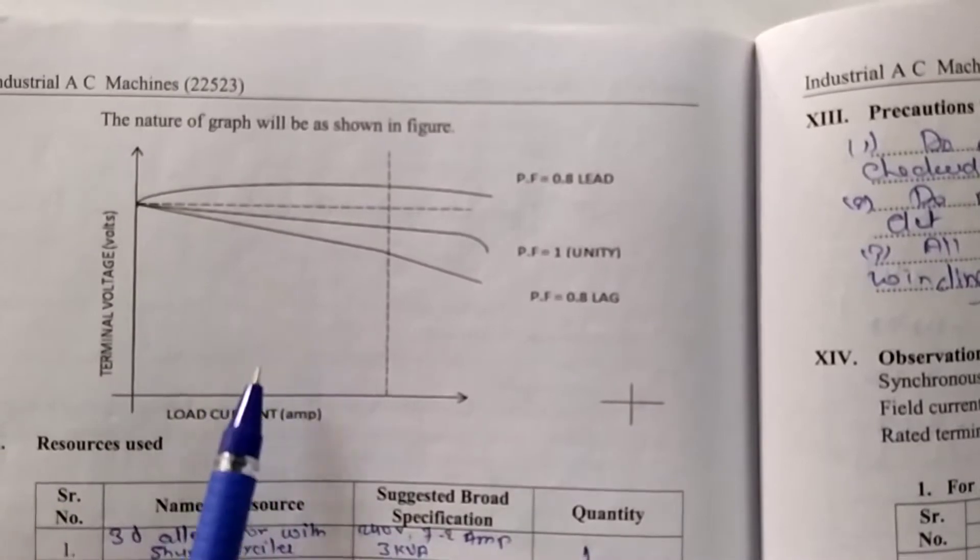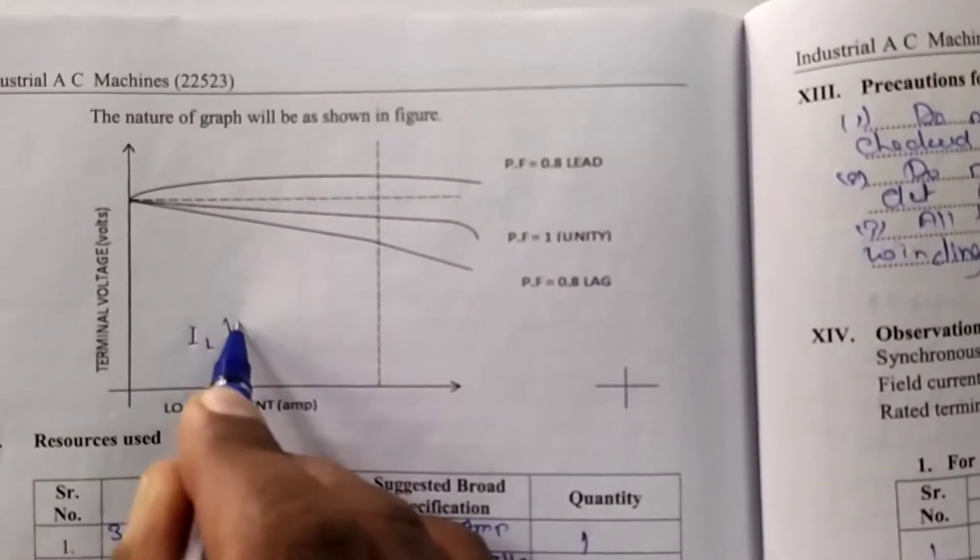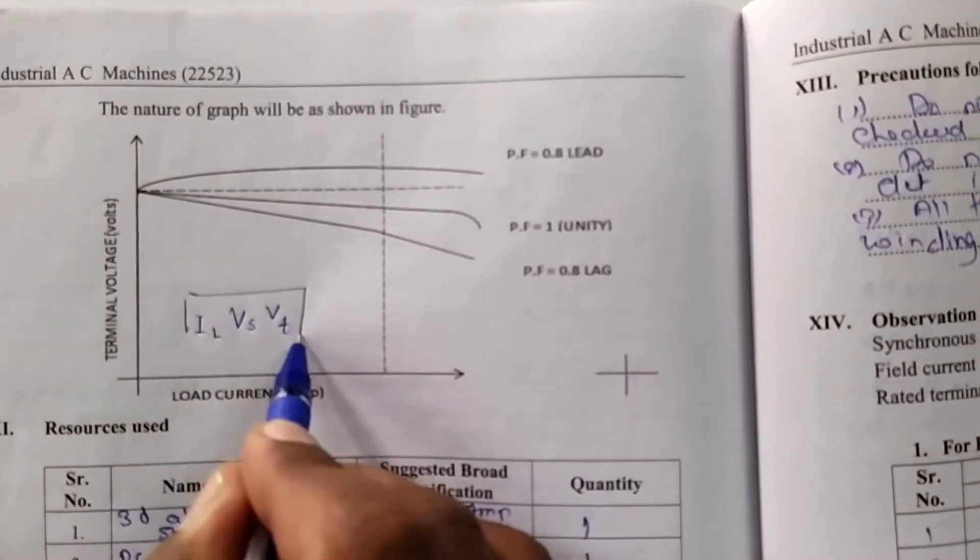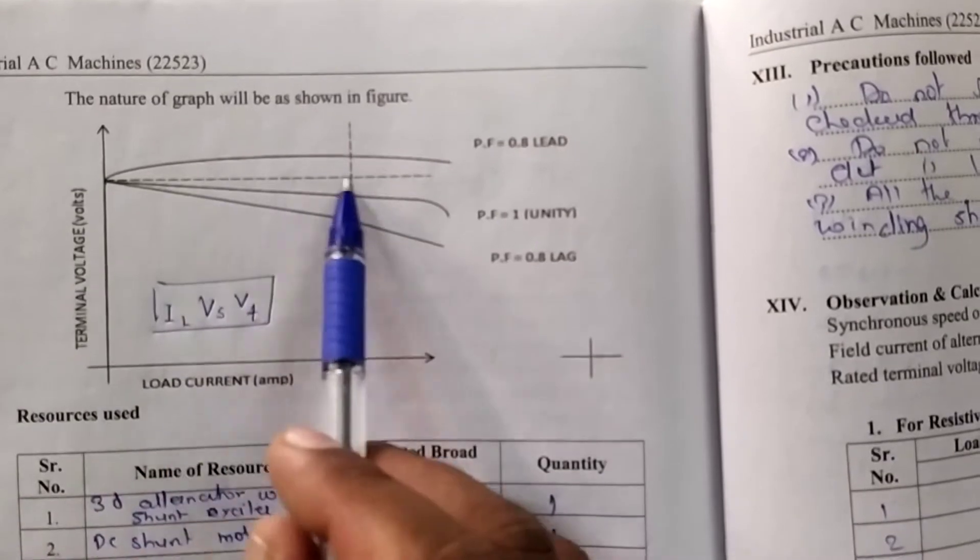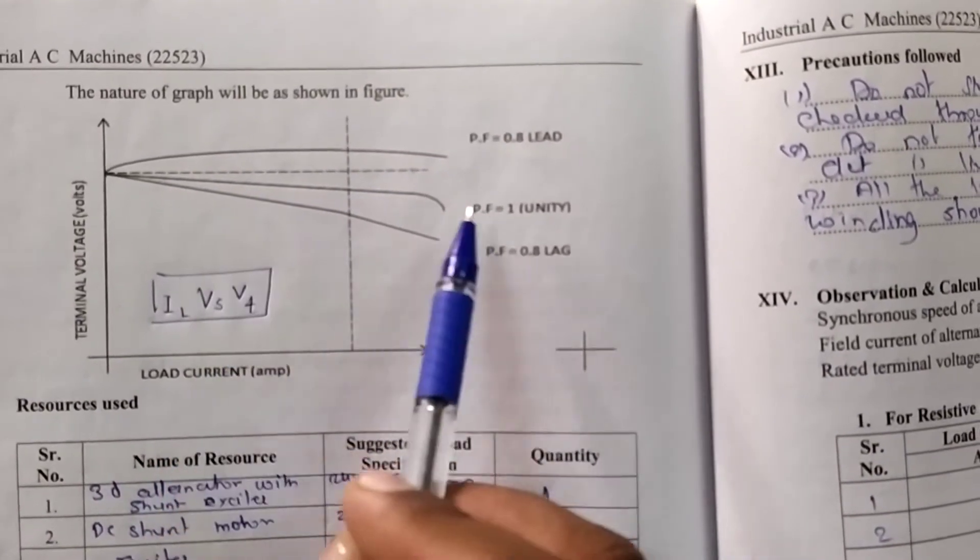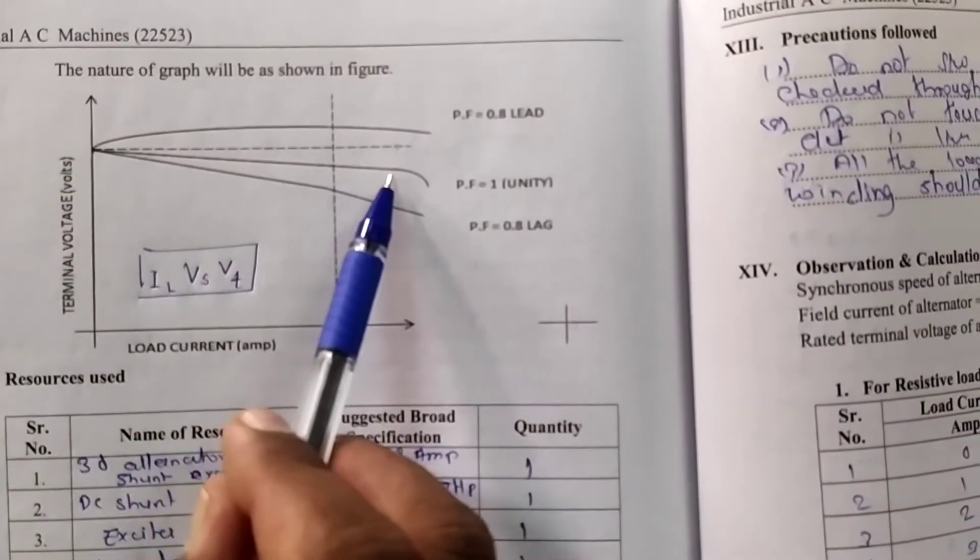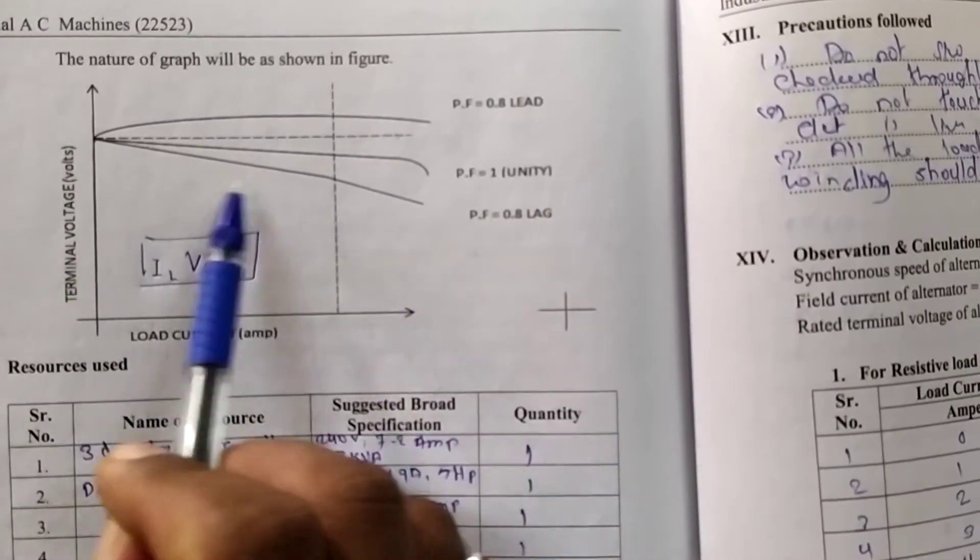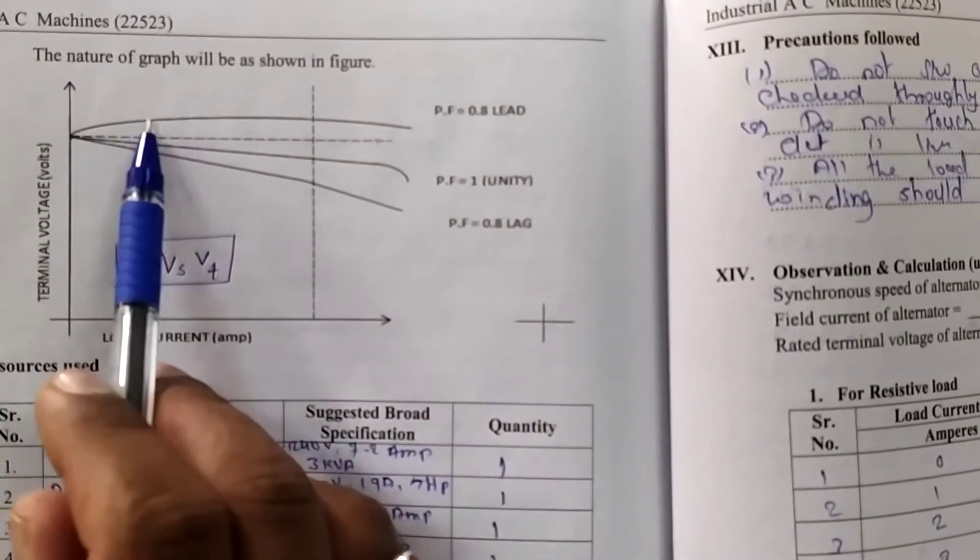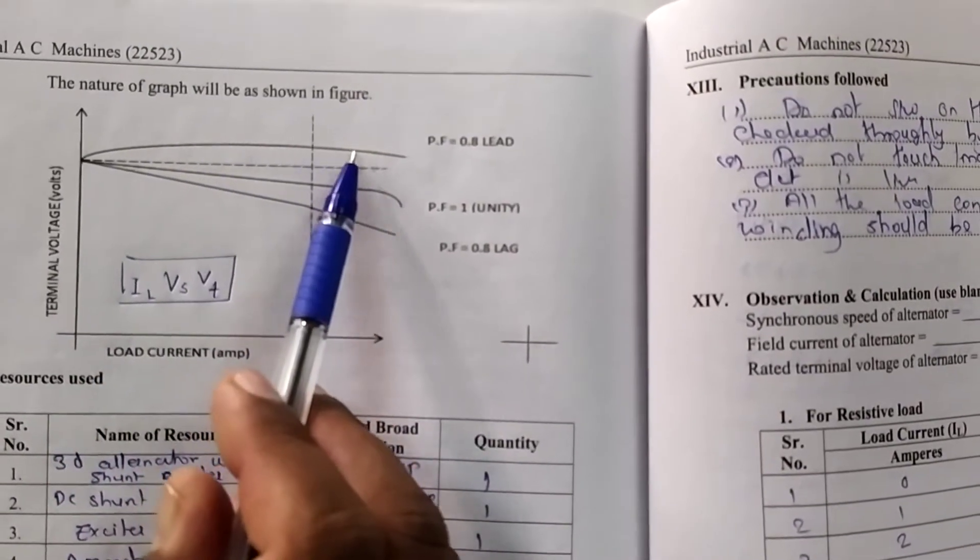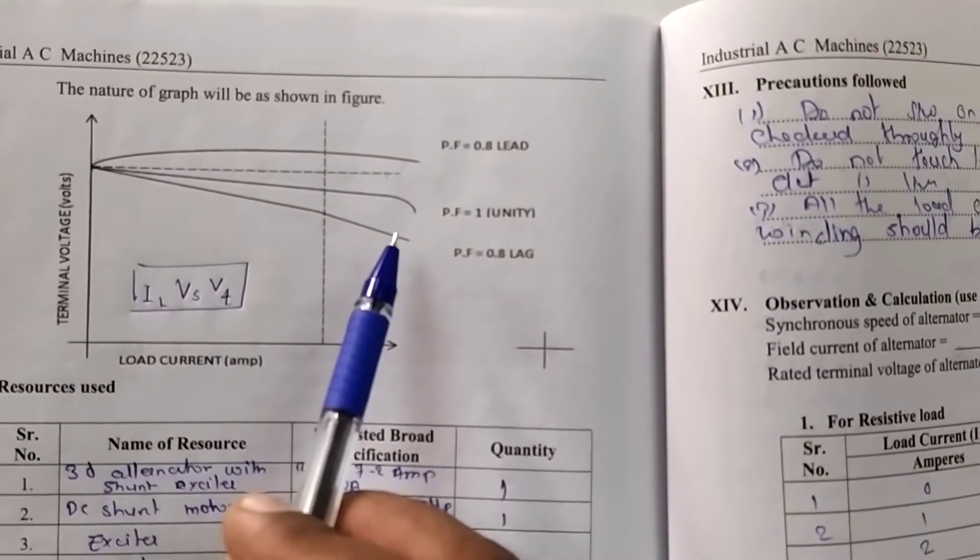Plot the nature of graph means load current versus terminal voltage, IL versus VT graph. From the graph, it is clear that this is the ideal voltage line. And for resistive load means power factor is unity, as the load current increases, the load terminal voltage slightly decreases. For inductive load, the voltage drop ratio is slightly increases. And for capacitive load, the voltage increases from its rated values. Hence power factor is 0.8 leading, unity and lagging.